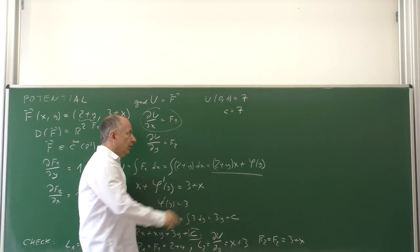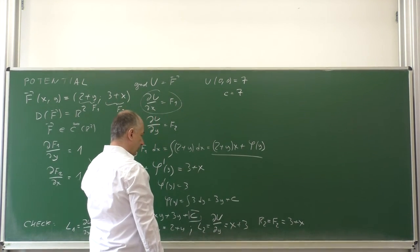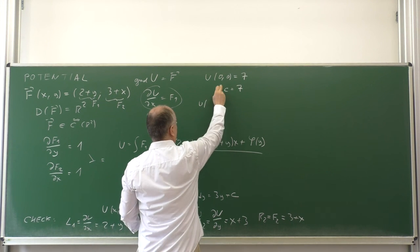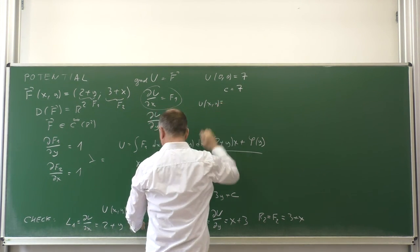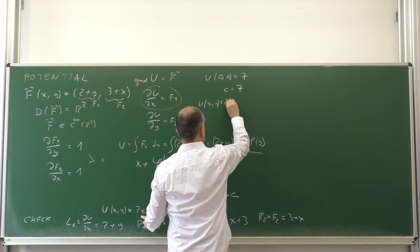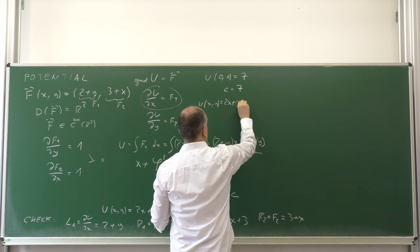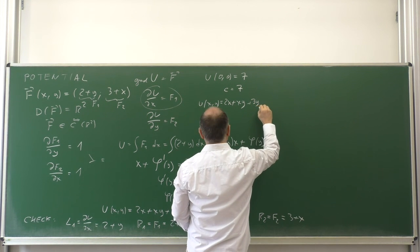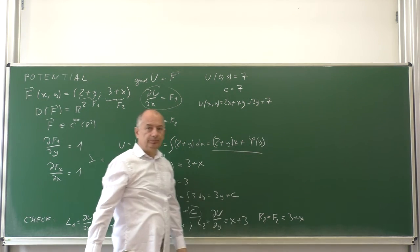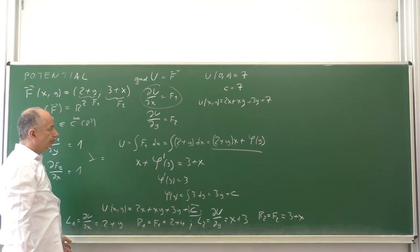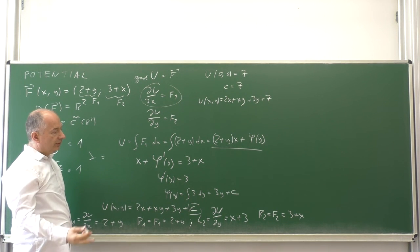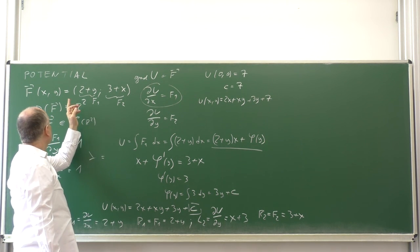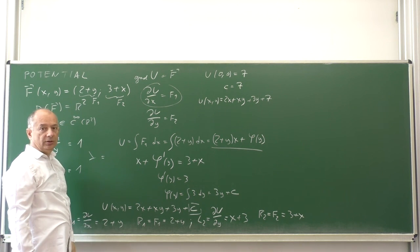Then, when we have the numerical value for the integration constant c, we can write that the potential satisfying this condition is equal to 2x plus xy plus 3y plus 7. So that was the first way to find the potential corresponding to a conservative vector field F.